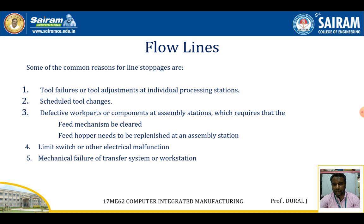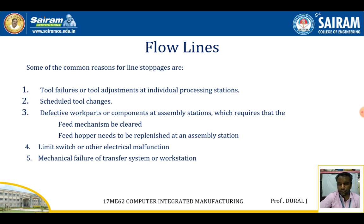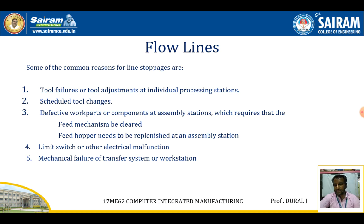Then come some defective work parts or components at the assembly station, which requires the feed mechanism to be cleared — the defective parts have to be taken out from the assembly lines. Also, feed hoppers need to be replenished at an assembly station, and sometimes for small electrical switch malfunctions, repairing those will require stopping the flow lines. Mechanical failures of the transfer system or workstations also cause line stoppages.